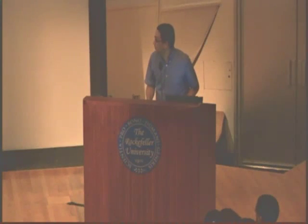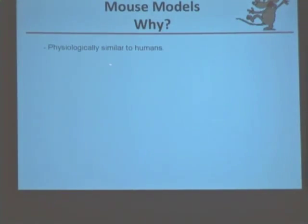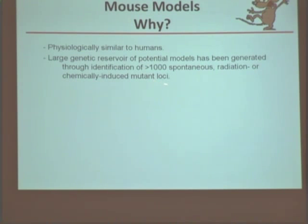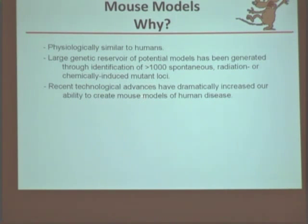Now that this tool exists — and we didn't make it, somebody else has made it — we can do mouse modeling. Mice are physiologically similar to humans. There is a large genetic reservoir and potential models that have been generated over the years. We have identified more than thousands of mutations due to radiation or chemically induced means. There is also genetic engineering that has led to the identification of many different genes and the creation of many mouse models for different diseases, as well as advances in mouse genomics and transgenic approaches.